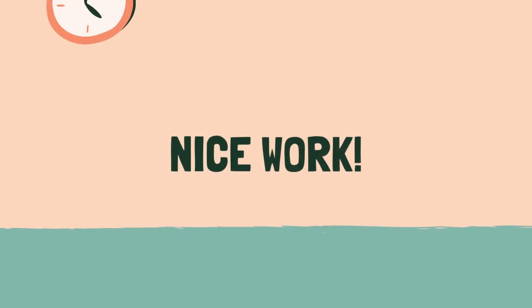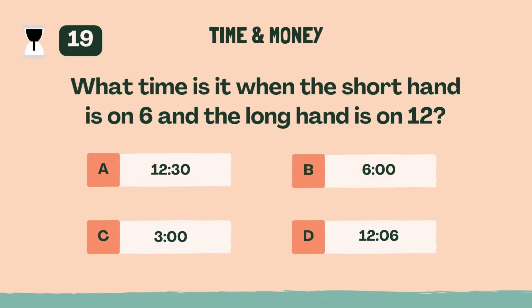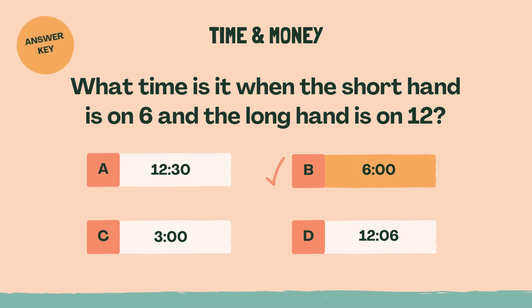Nice work. Time for the next category. Category 3: time and money. Three, two, one, go. What time is it when the short hand is on 6 and the long hand is on 12? B, 6 o'clock.